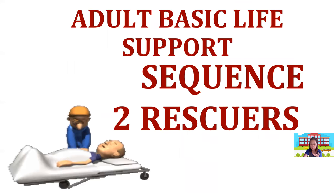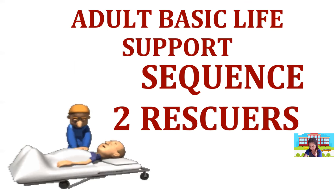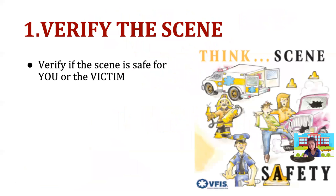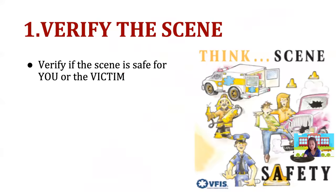Five cycles of CPR — five sets of 30 compressions and two breaths — equals approximately two minutes. That covers the one-rescuer adult basic life support. Now we will discuss two-rescuer adult BLS, repeating most of the steps.